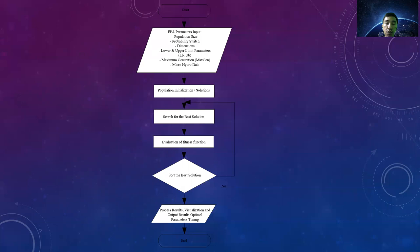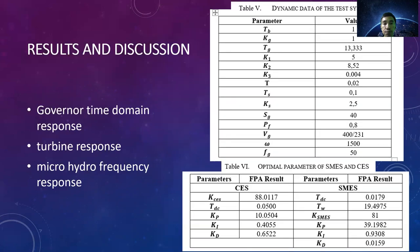Next, we move to the flowchart of this research. We describe it with this flowchart. We start with collection of the data that we use in the model system. After that, we run the simulation and run the FPA algorithm. Finally, we can get the optimal results of the optimization of SMES and CES parameters. Next is results and discussion. There are three parts.